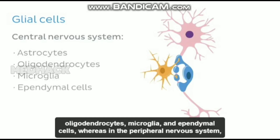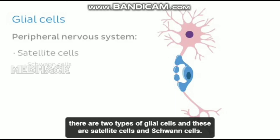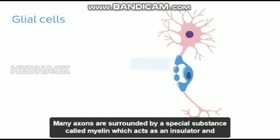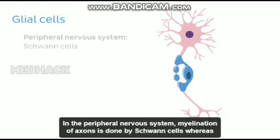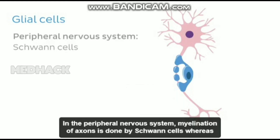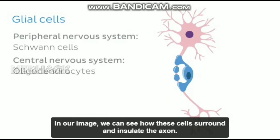Whereas in the peripheral nervous system, there are two types of glial cells, and these are satellite cells and Schwann cells. Many axons are surrounded by a special substance called myelin, which acts as an insulator and helps to transfer information more quickly. In the peripheral nervous system, myelination of axons is done by Schwann cells, whereas in the central nervous system, it's done by oligodendrocytes. In our image, we can see how these cells surround and insulate the axon.